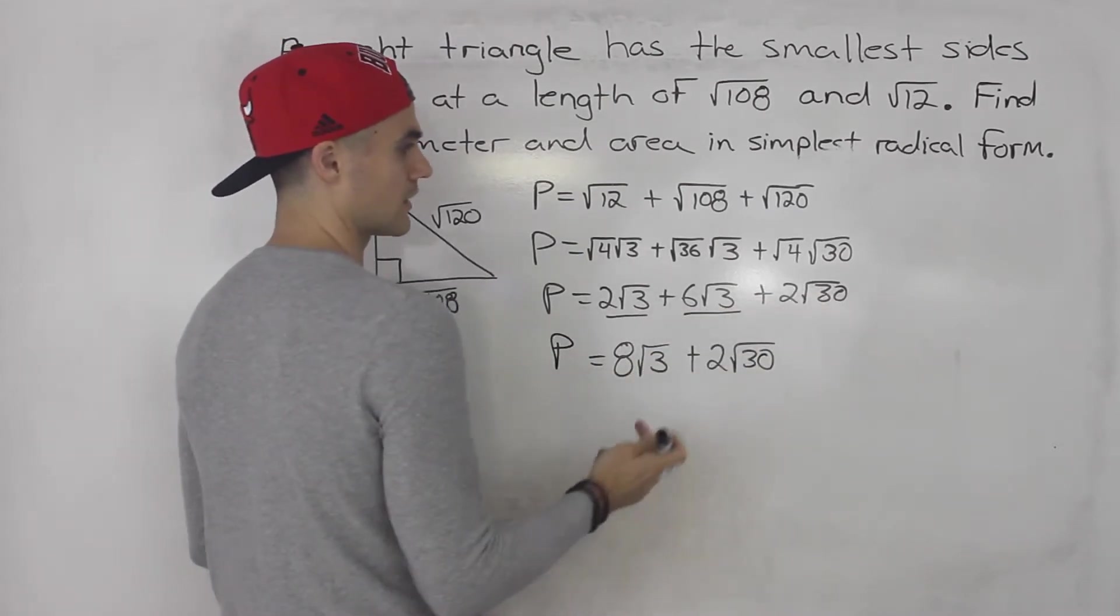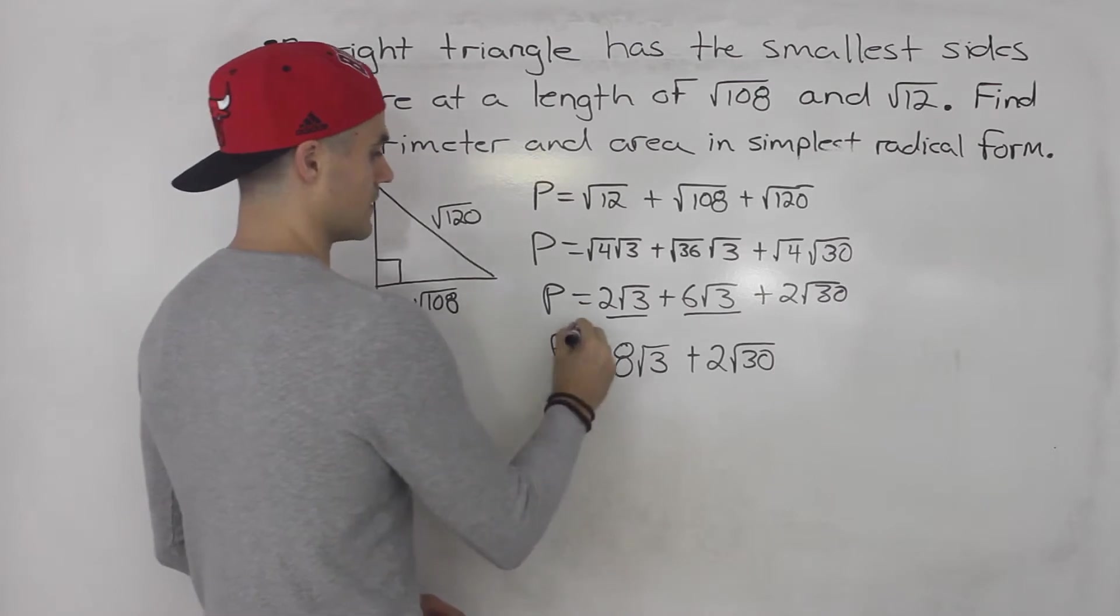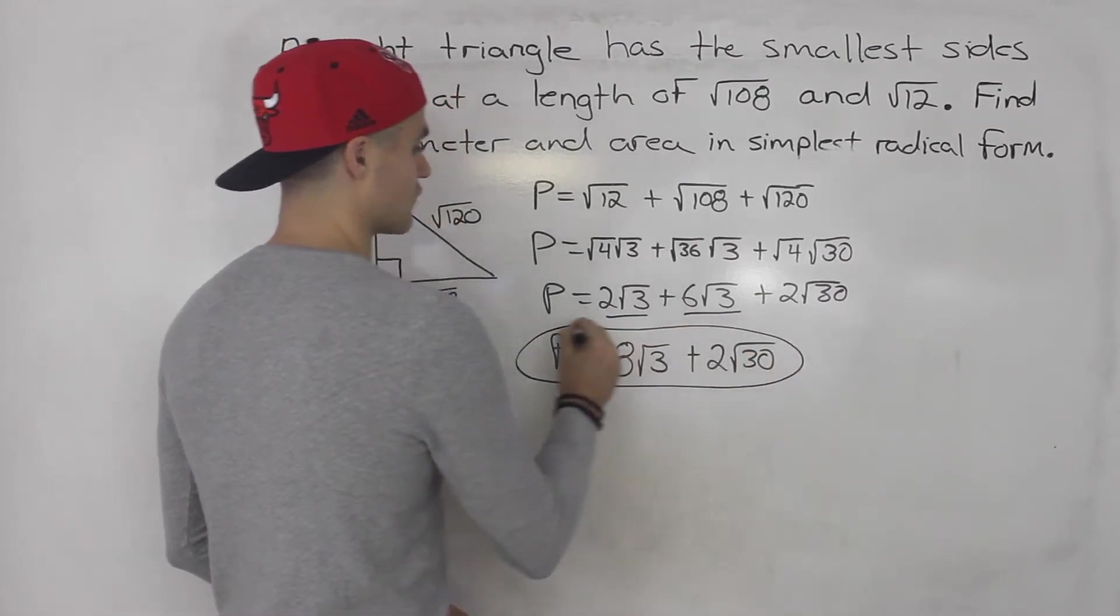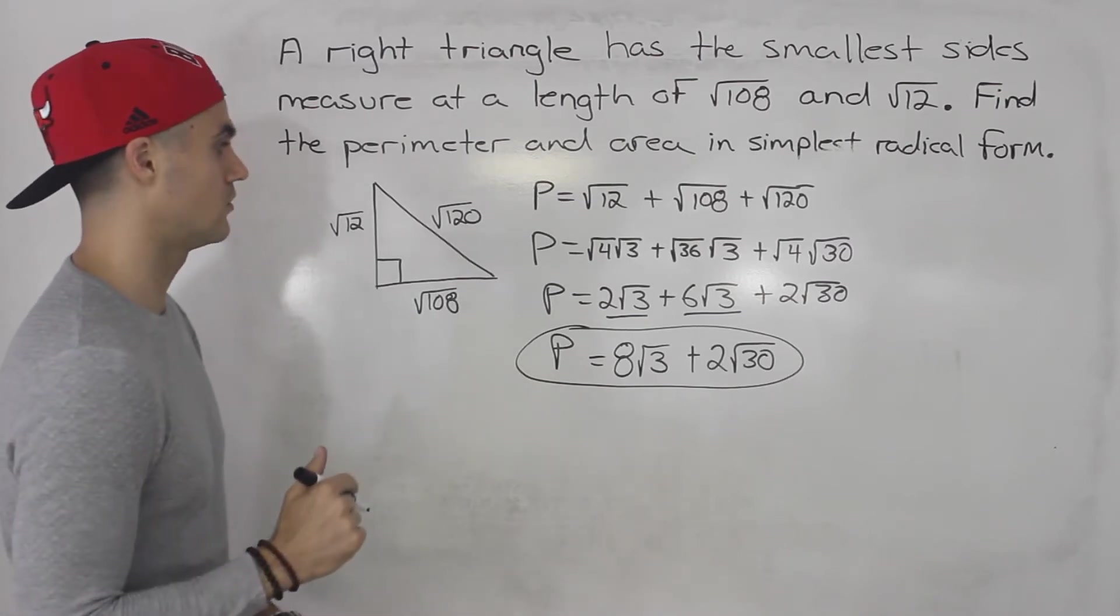These two are not like terms. Root 30 and root 3 are not like terms, so we have to keep them separate. So that there is your final answer for the perimeter in simplest radical form.